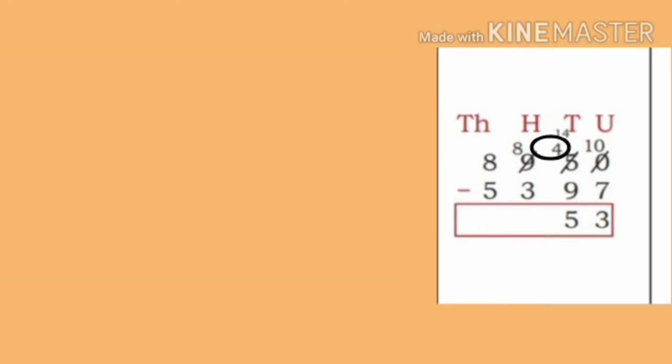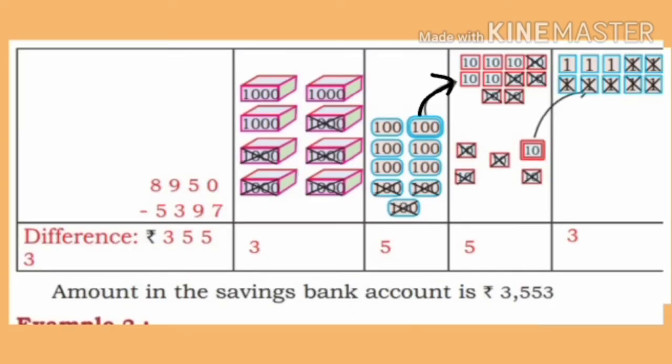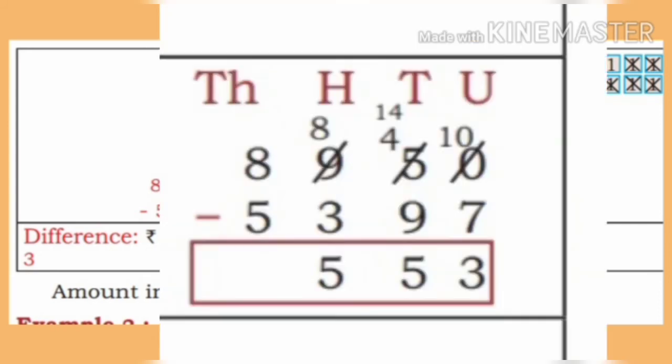Now in the tens place of the minuend, 4 is present. It is not possible to subtract 9 from 4. Therefore, borrow 100 from the hundreds place. 100 has 10 tens. In the tens place, we get 10 plus 4 is 14. On subtracting 9 from 14, we get 5. Now, 8 is left in the hundreds place.